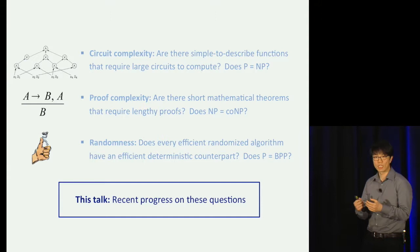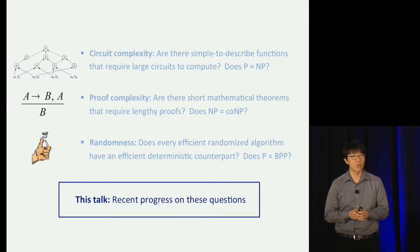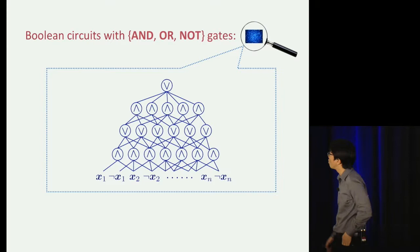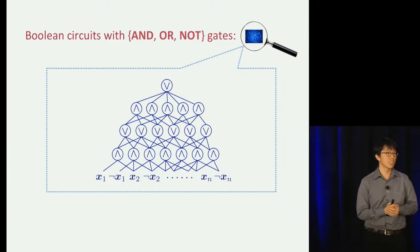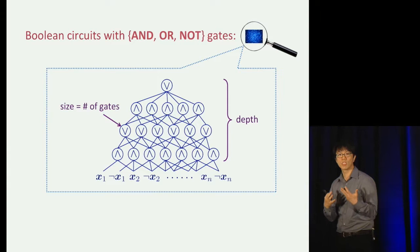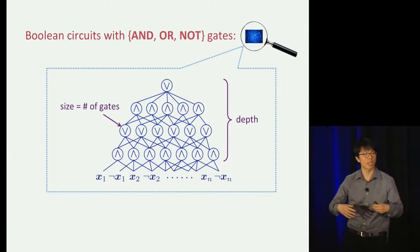The first result comes from circuit complexity. We'll be working within the standard model of circuit complexity — circuits over the standard basis of AND, OR, and NOT gates. In circuit complexity, we're interested in statements like: here's a function that requires very complex circuits. There are two basic complexity measures: size, the number of gates in the circuit, and depth, the number of layers. We're interested in showing that a function requires very large size and/or very large depth.